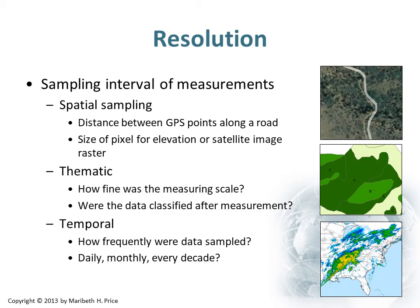Resolution was touched on before, but let's make sure we understand it. The simplest thing to think about is the sampling interval of measurements. For spatial sampling, it's the distance between GPS points along a road, or the size of the pixel for elevation, satellite images, or any raster data. For thematic maps, how fine was the scale at which we measured, and was the data classified after measurement? Temporally, how frequently was the data sampled — daily, monthly, every 10 years? That frequency of collecting data points is its temporal resolution.